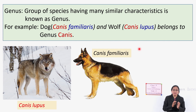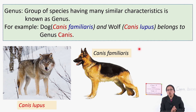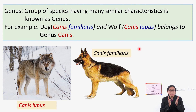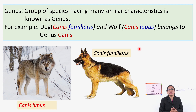Another example: dog and wolf. Dog lives in our house and wolf lives in the jungle, but both belong to the same genus — Canis. The scientific name of dog is Canis familiaris and the scientific name of wolf is Canis lupus. Some characteristics are similar and some are different between them.